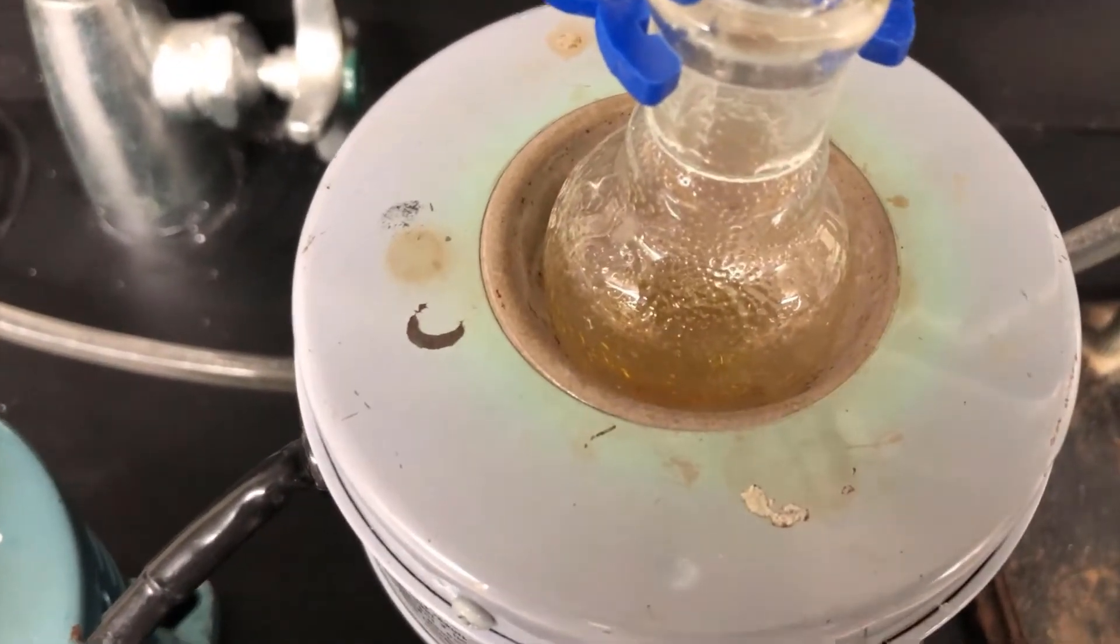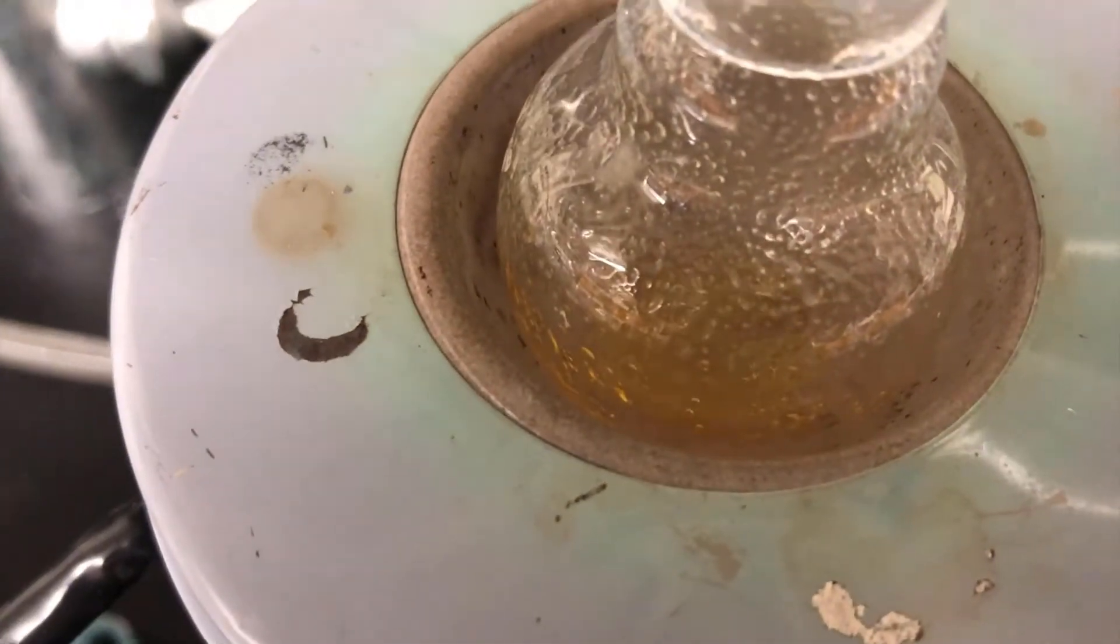As the distillation nears completion, you'll notice the temperature starting to drop on the thermometer. This is because there isn't enough vapor coming over to keep the thermometer warm. This is what the apparatus looks like at this point. When it reaches this stage, you should turn off the variable transformer and remove the heating mantle and allow the distillation apparatus to cool.